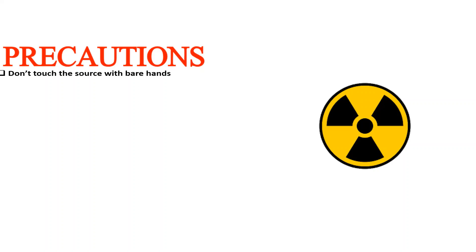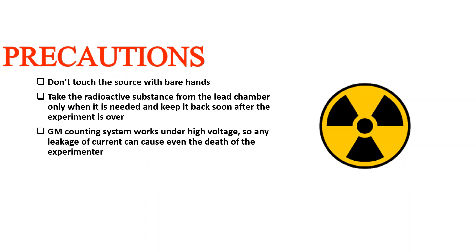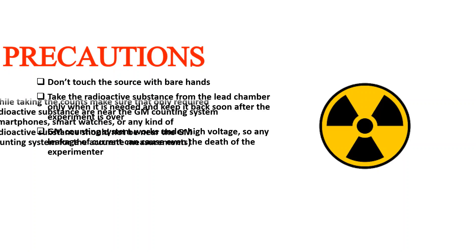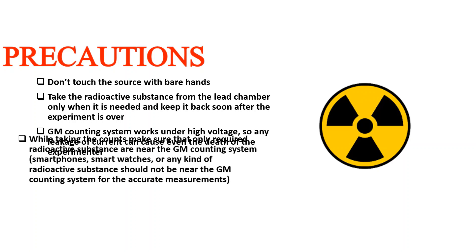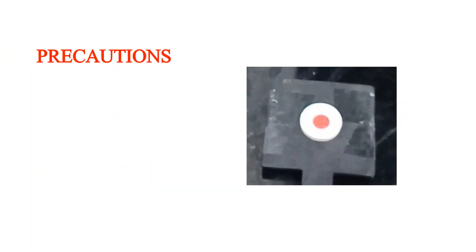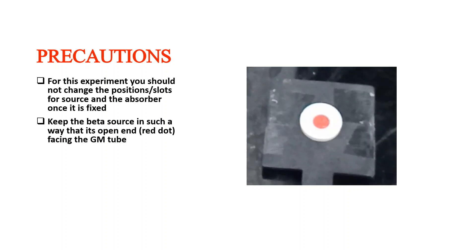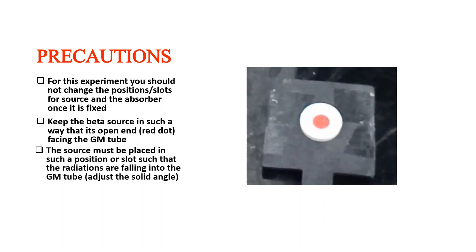Precautions: Do not touch the source with bare hands. Take the radioactive substance from the lead chamber only when needed and return it soon after the experiment. The GM counting system operates under high voltage, so any current leakage can be dangerous. While taking counts, ensure only the required radioactive substance is near the system. Smartphones, smart watches, or any other radioactive substance should not be nearby. Do not change the positions or slots for the source and absorber once fixed. Keep the beta source facing the GM tube so radiation falls into it at the correct solid angle. Wash your hands after the experiment.